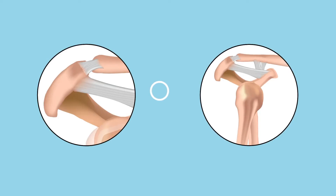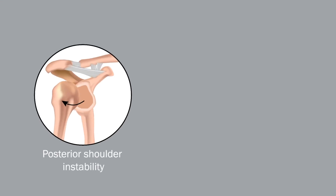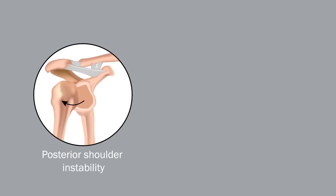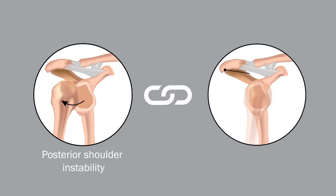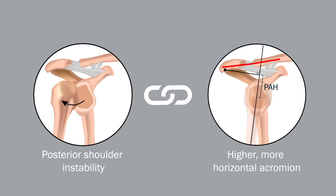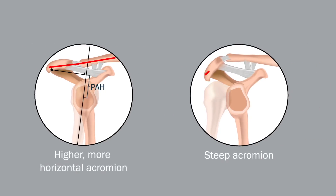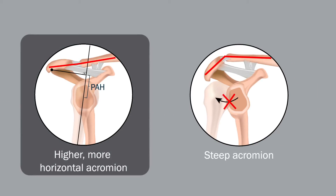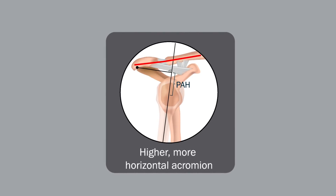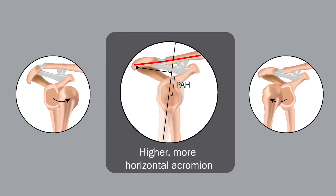They found that posterior acromial morphology did correlate with the direction of shoulder instability. Posterior instability was significantly associated with a higher and more horizontally oriented acromion, and a steep acromion virtually excluded shoulders from the posterior instability group. The height of the posterior acromion was the factor that differentiated the most between posterior and anterior instability.